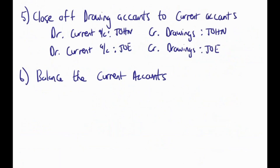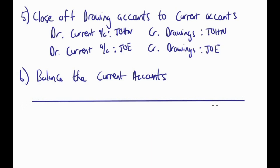Step 5 is to close off the drawings accounts to the current accounts. We debit current account John, credit drawings John. We debit current account Joe, credit drawings Joe. It's very important when you do the counter account that you indicate 'current account John,' not just 'current account.' The last step is to balance the current accounts.